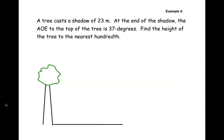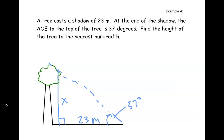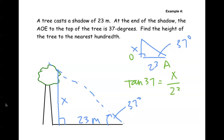Next example: a tree casts a shadow of 23 meters. At the end of the shadow, the angle of elevation to the top of the tree is 37 degrees. We want to figure out the height of the tree to the nearest hundredth. Our triangle has 23 (adjacent), x (opposite), and 37 degrees. Using tan: tan 37 equals opposite over adjacent. Creating a proportion and cross-multiplying, x comes out to be around 17.33 meters.